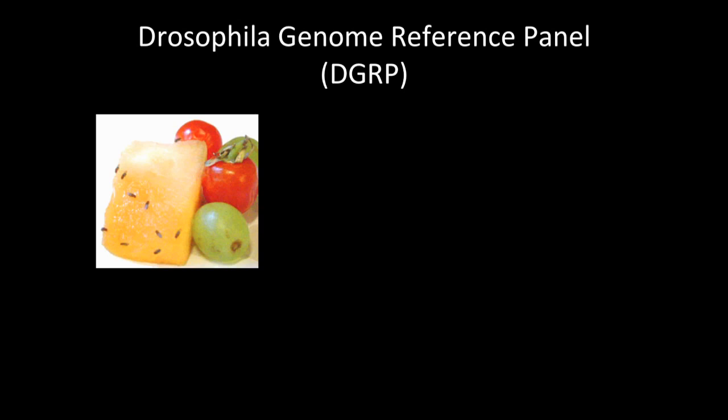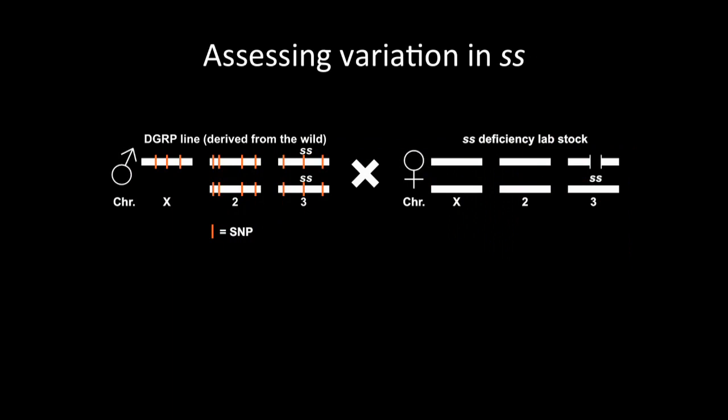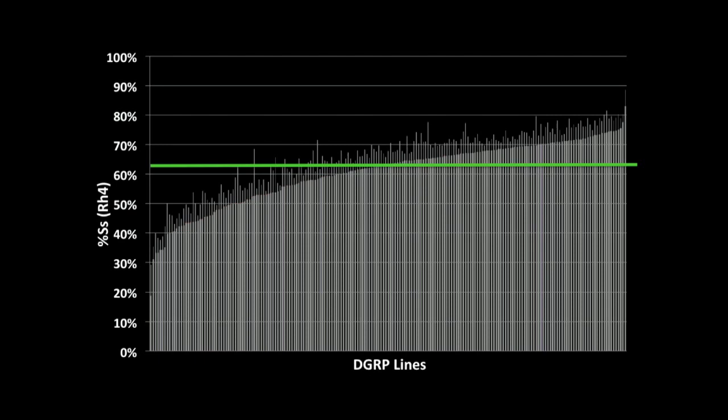So to get at this question, we use the DGRP, which is a collection of 205 fly lines from the wild that have been inbred and sequenced. So to assess the variation just within the spineless locus, we took each DGRP line and crossed it to our spineless deficiency lab stock and then analyzed the resulting spineless on-off ratio in the progeny. So the idea is, assuming that the SNPs are recessive, we'll be looking at variation that's just attributable to the spineless locus.